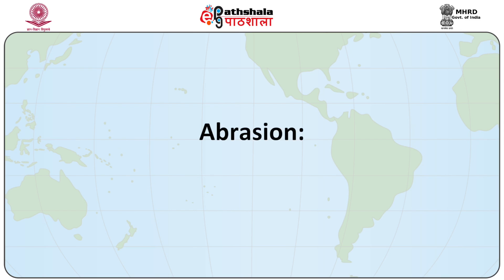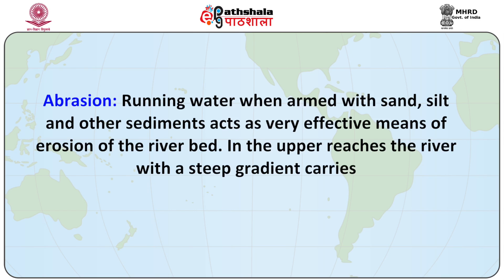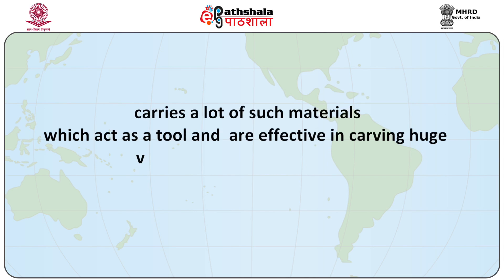Running water, when armed with sand, silt and other sediments, acts as a very effective means of erosion of the river bed. In the upper reaches, the river with a steep gradient carries a lot of such material which acts as a tool and is effective in carving huge valleys, gorges and canyons. In contrast, if the river is free of these sediments, the erosion by abrasion is minimal and the river would take much longer time to erode its bed.